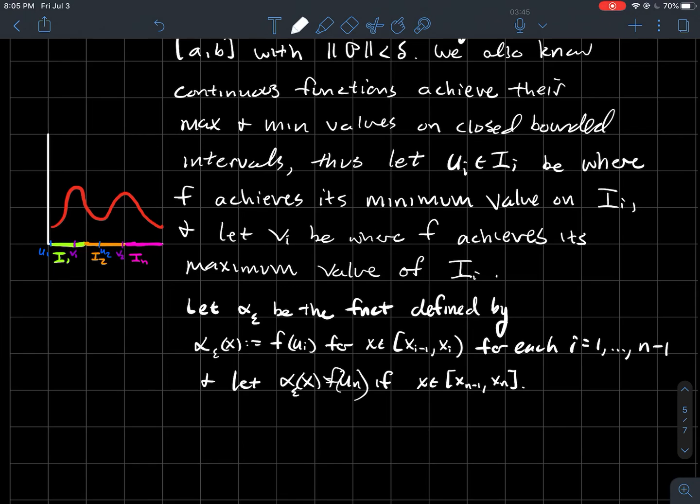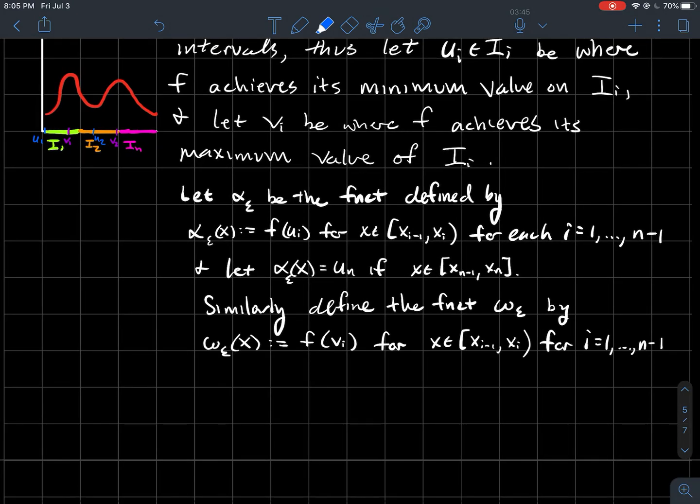And then what we're also going to do—maybe notice what is alpha effectively doing. I'm saying I'm going to let alpha X just be whatever that smallest value is over that whole sub-interval. So if you think about it, alpha is a step function. And I'm going to define another step function called omega epsilon, kind of the same way, but using F of VI instead. So omega epsilon of X is going to be F of VI, that constant, over this sub-interval XI minus 1 to XI. And again, that's going to be the story for all the sub-intervals except for maybe the last one. I'll just let it be F of VN if it's any point inside of here and including the endpoint.